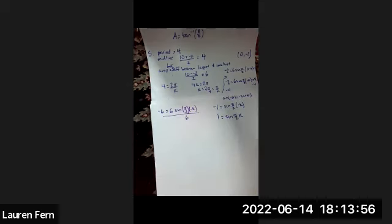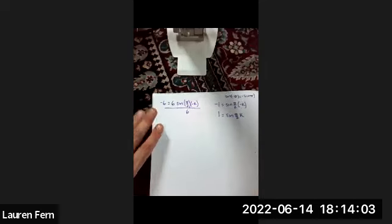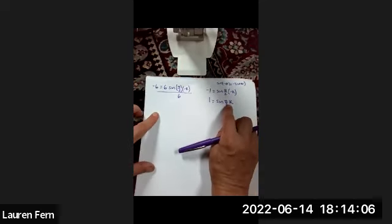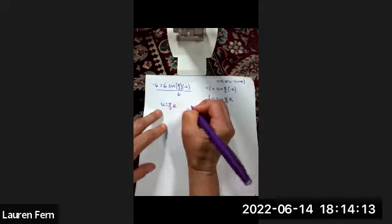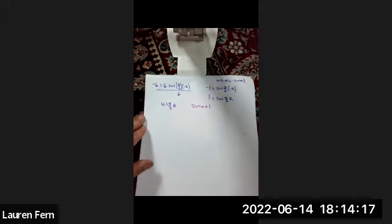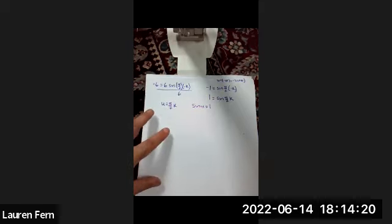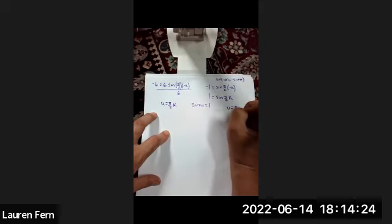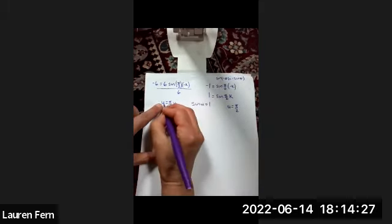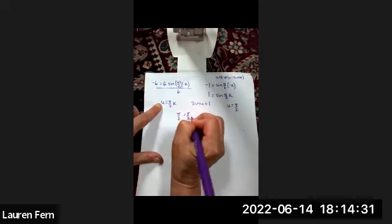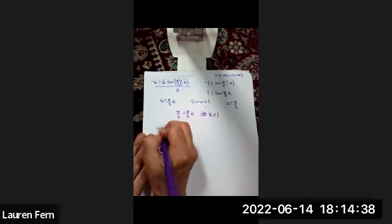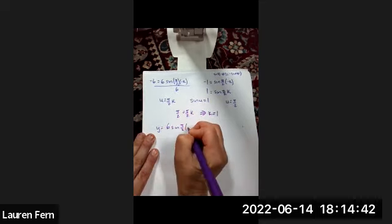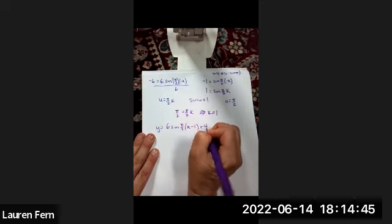Using substitution, let u = π/2 · k. We want sine(u) = 1. We know sine(π/2) = 1, so u = π/2, which gives k = 1. Therefore, the equation is y = 6 sine(π/2 · (x − 1)) + 4.